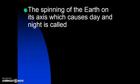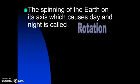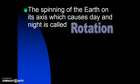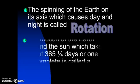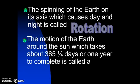The spinning of the Earth on its axis is what actually causes day and night and that is called a rotation. A full rotation takes a full day, sun up to sun down. The motion of the Earth around the Sun, that revolution, takes about 365 and a quarter days. It's one year to complete a revolution.